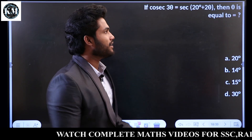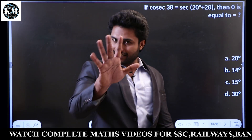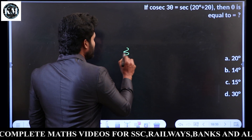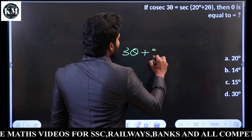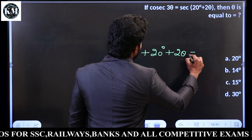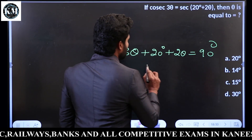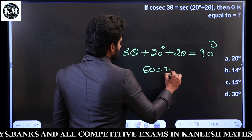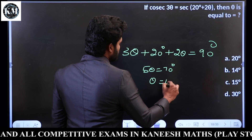In the SSC Railway Exam, we can solve a sum in 10 seconds. 3 theta plus 20 degrees plus 2 theta is equal to 90 degrees. 5 theta is equal to 70, theta is equal to 14.